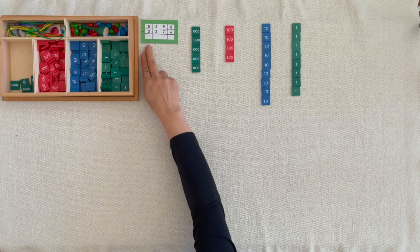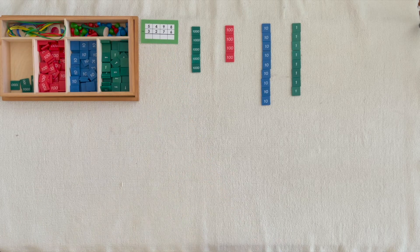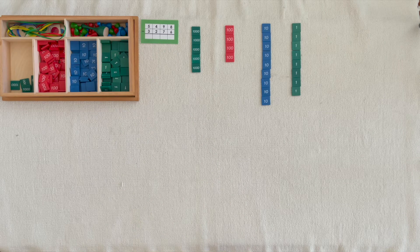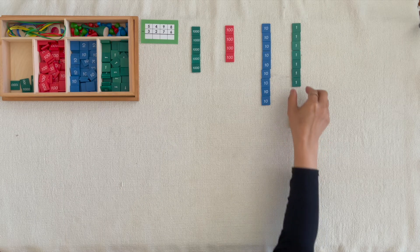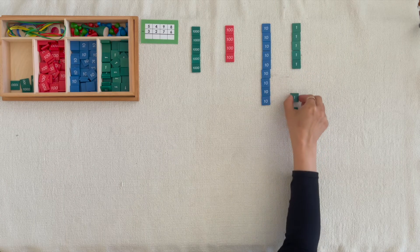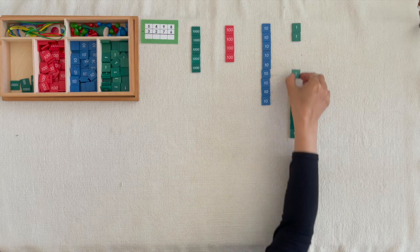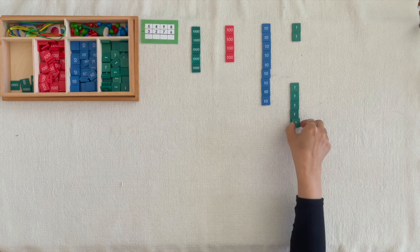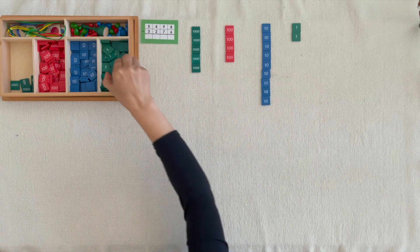Can you take away 3,200s, 7,10s, 6 units starting with the units? Thank you.